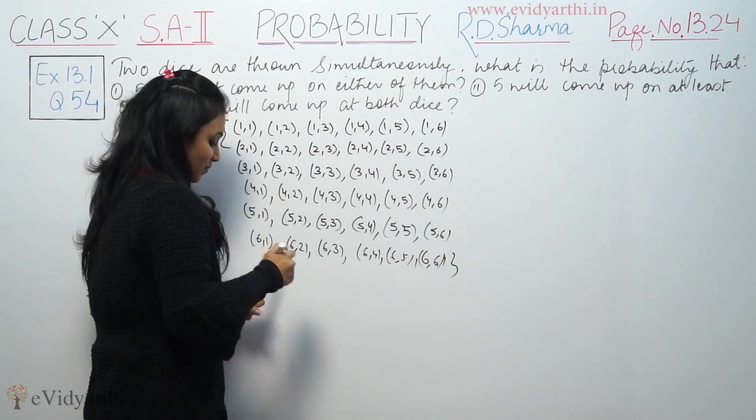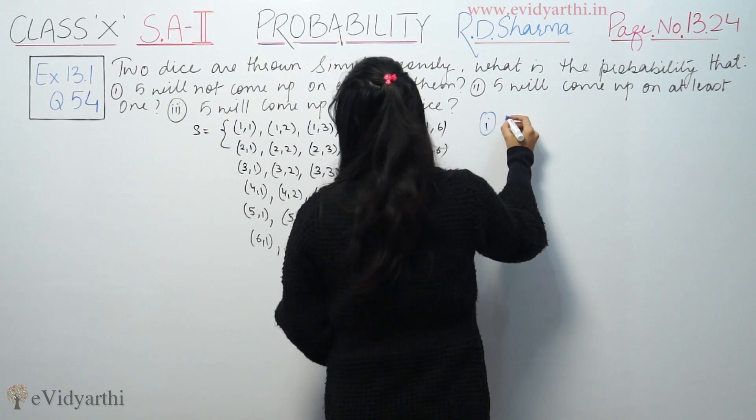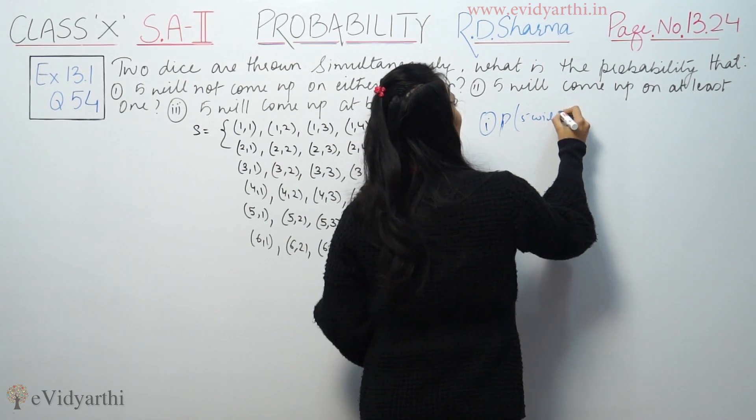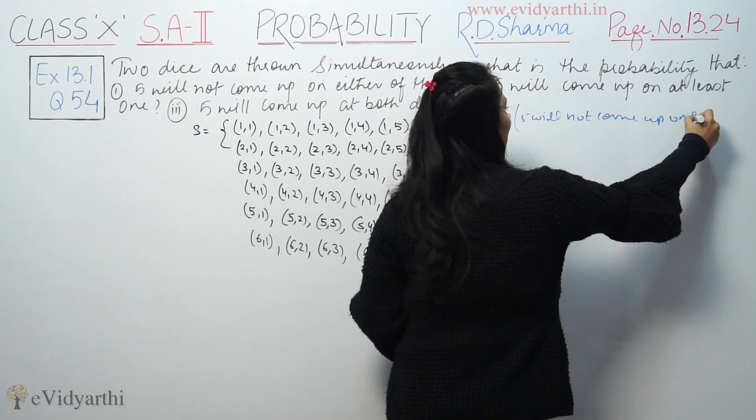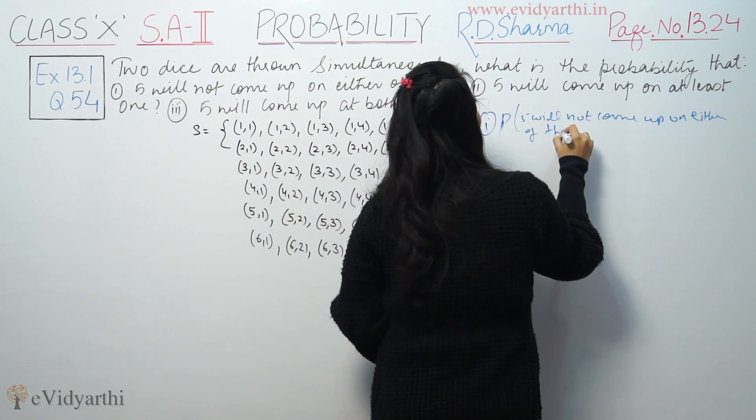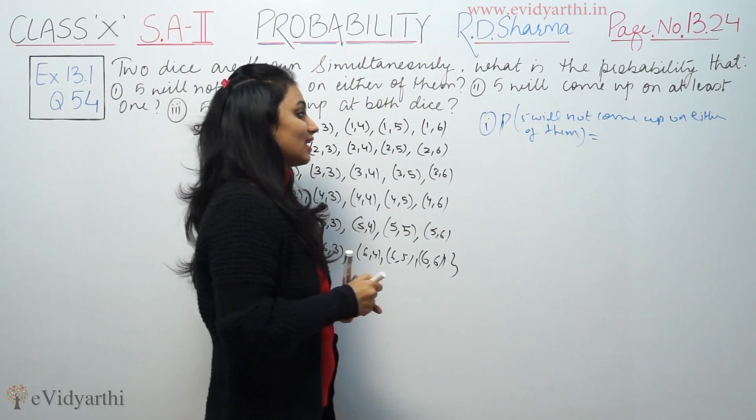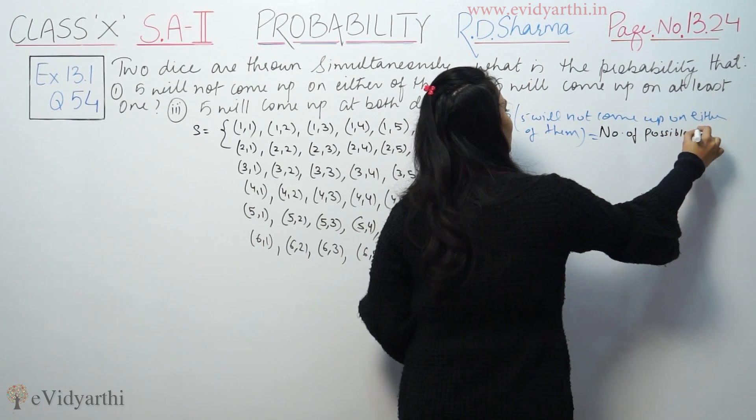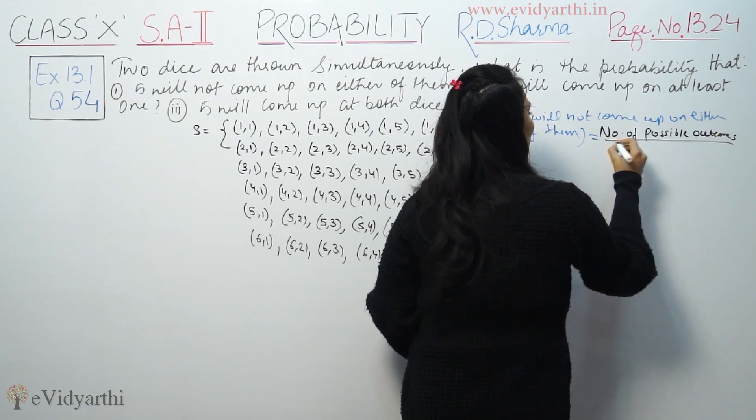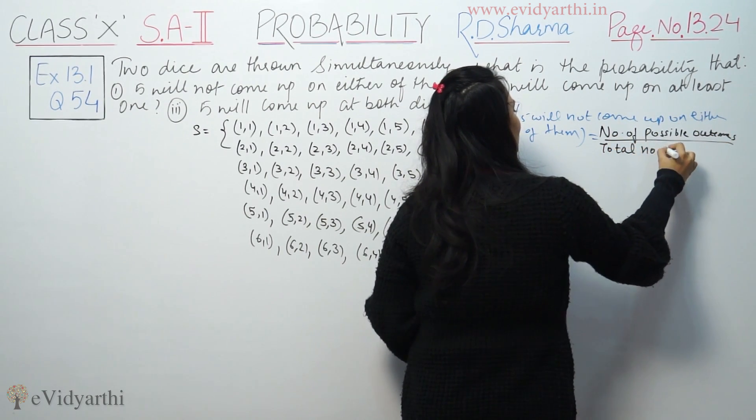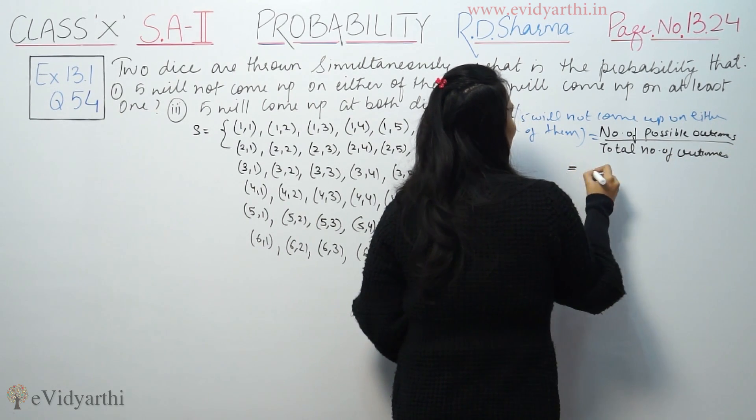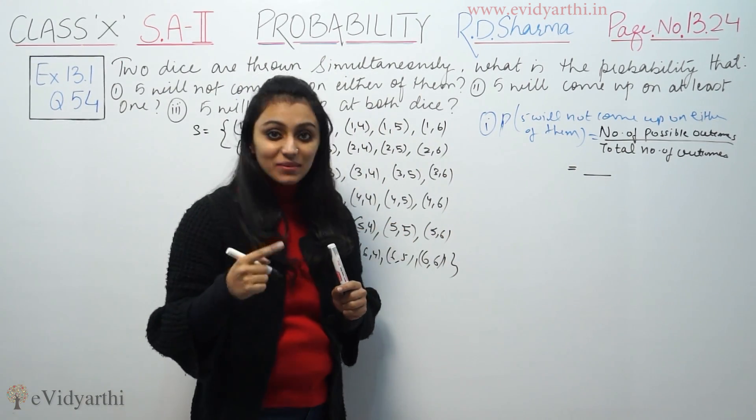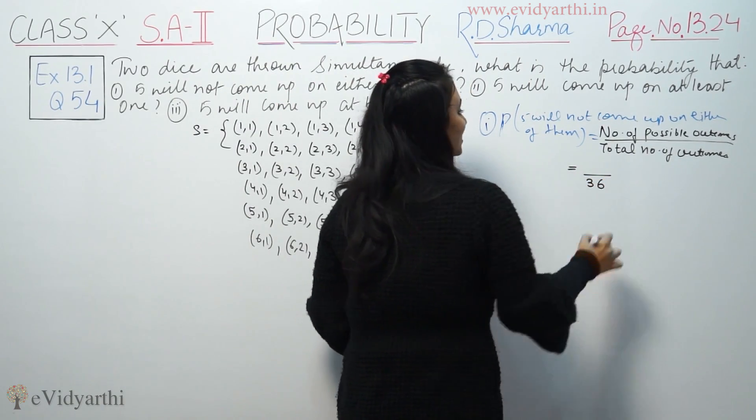These combinations show that the dice will be this way. Now, we have to say that we have a probability that 5 will not come up on either of them. About the total number of outcomes, total outcomes, you see, 6 times 6 equals 36 total cases are possible.